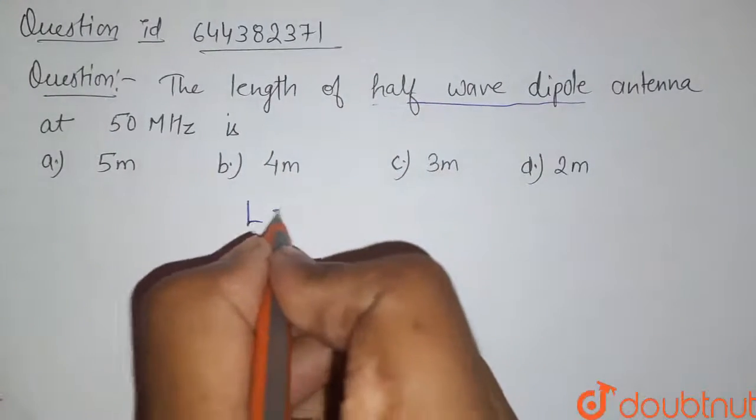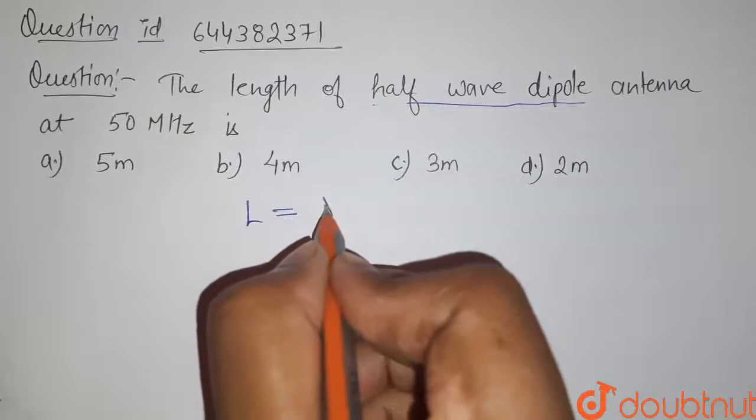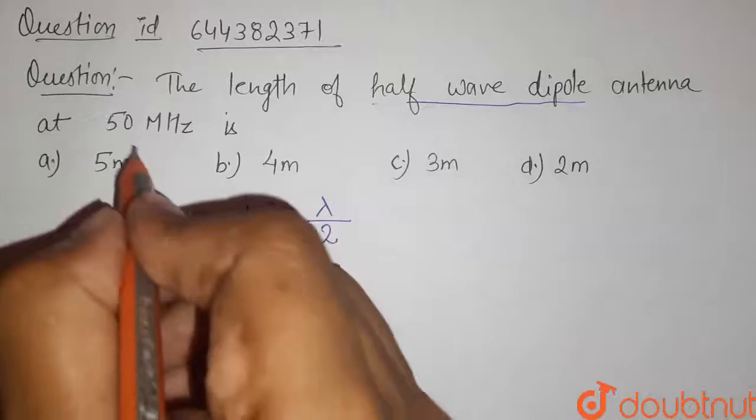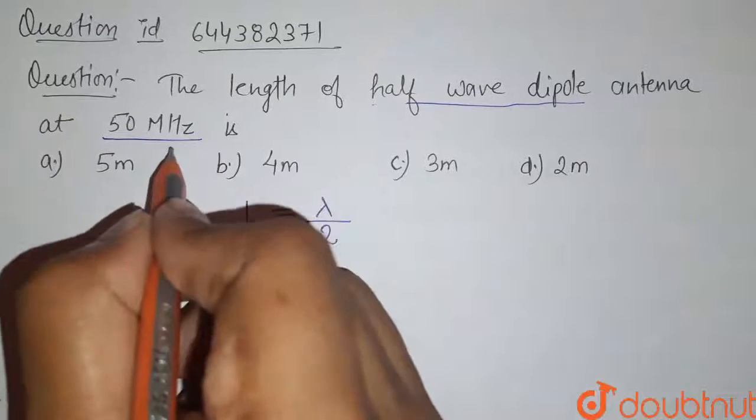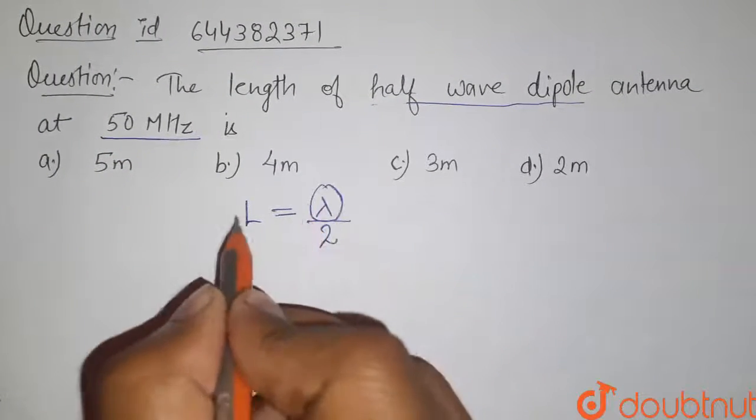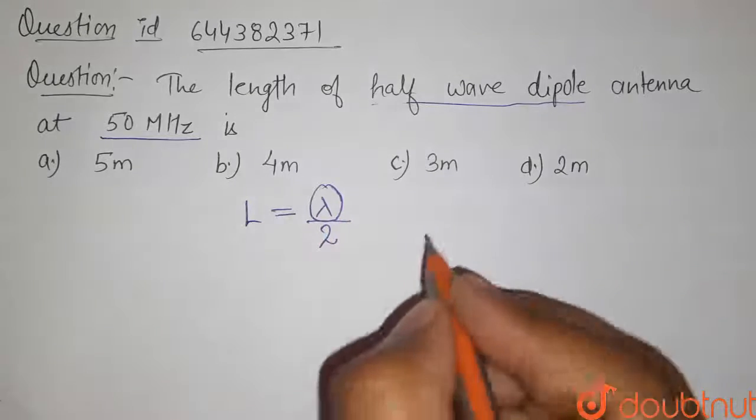The length of half wave dipole antenna is given by lambda divided by 2. But here in question we have been given the frequency. So first of all we have to find the lambda, that is wavelength, and then we will find the length of this antenna.